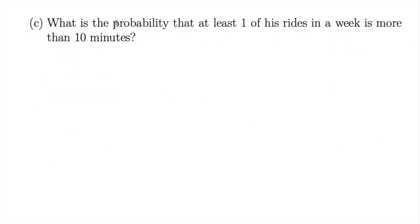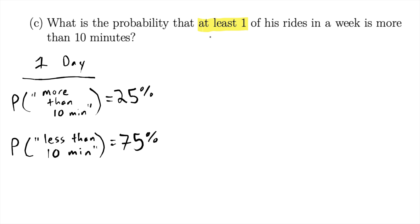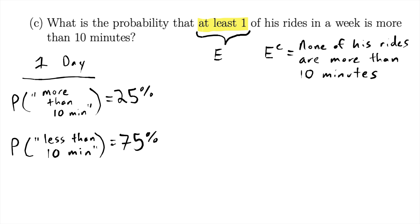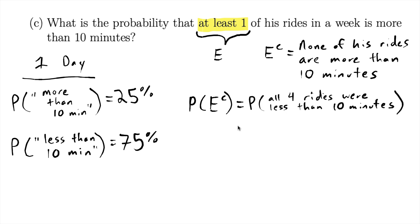In part c we have: what is the probability that at least one of his rides in a week is more than 10 minutes long? I'm going to do this the quickest and easiest way. If I call 'at least one' an event, then the complement of that is that none of his rides are more than 10 minutes long. The complement of 'at least one' is 'none.' We're going to find the probability of this event by first finding the probability of its complement. If none of his rides are more than 10 minutes, that's the same as all rides being less than 10 minutes.